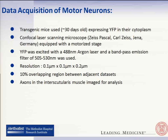The data acquired in this study were acquired from transgenic mice which expressed YFP in their cytoplasm. A laser scanning microscope with a motorized stage was used, which means the entire connectome was not taken as a snapshot — it was taken in bits and pieces. We have data that are adjacent to each other, with a variable overlap left between them intentionally so that later we can put them together and look at the big picture.